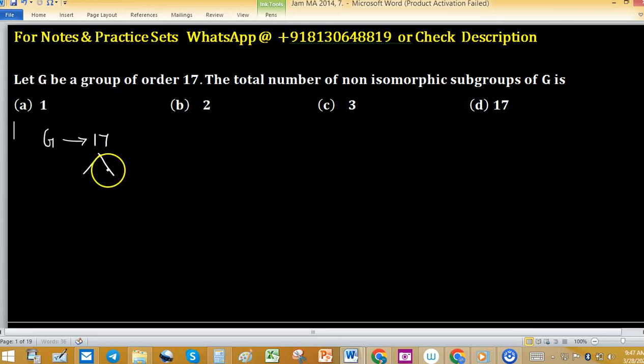There exist subgroups of order 1 and of order 17. These two are trivial subgroups and they are different in order. That's why they are non-isomorphic subgroups of G.